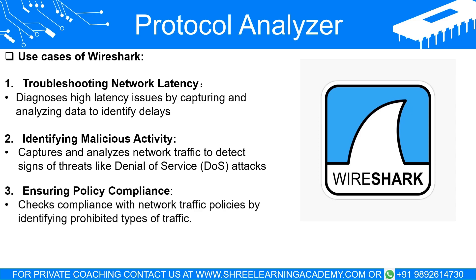Use case 3: ensuring policy compliance. Businesses often have policies about the types of network traffic that are allowed. For example, a business might prohibit the use of peer-to-peer file sharing software due to the security risk it poses. Wireshark can be used to ensure compliance with these policies.